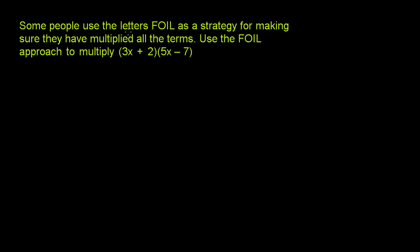This problem says some people use the letters FOIL as a strategy for making sure they have multiplied all the terms. Use the FOIL approach to multiply (3x + 2)(5x - 7).